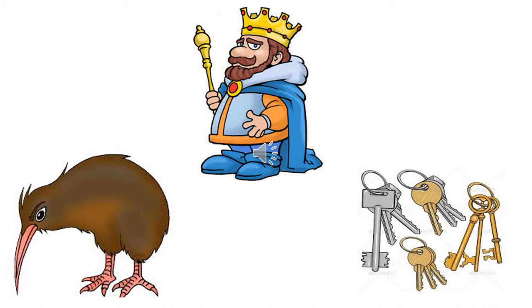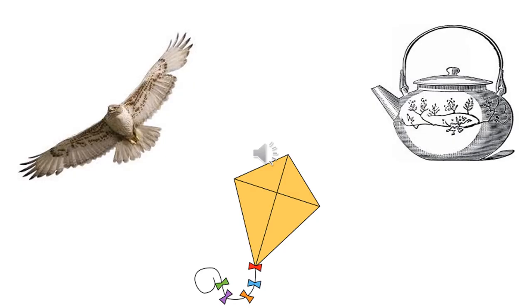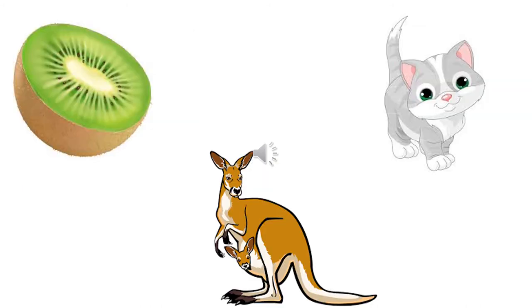So children, we see here — K is for king. K for the bird kiwi. K for kangaroo. K for kitten. Children, remember the sound of K is K.